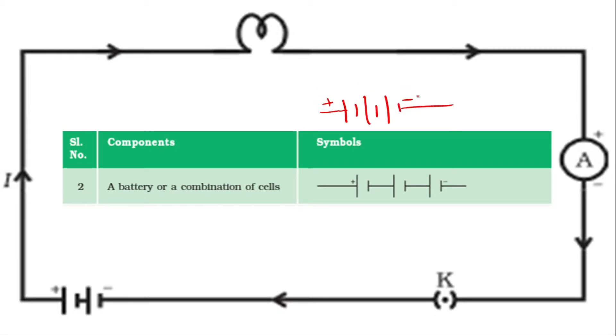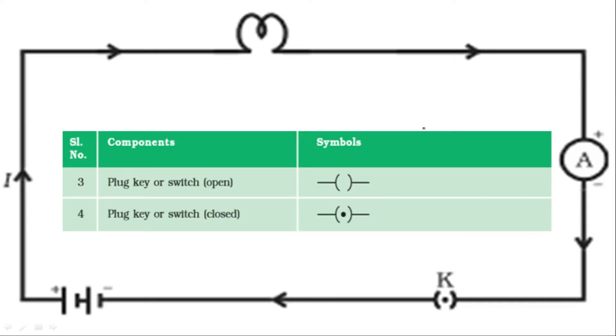Then plug key or switch. So we can use two types of symbol to symbolize the switch. Once as shown here like this, and another like this. We can use any of the symbol for it. So for the open key we can either use this symbol or we can use this symbol. And for a key in close condition, we have to make a dot in between this bracket to symbolize that the key is on or circuit is closed.